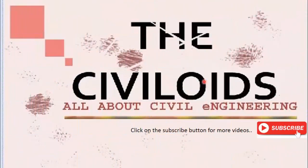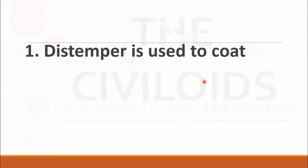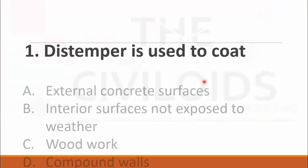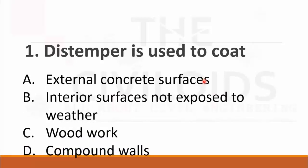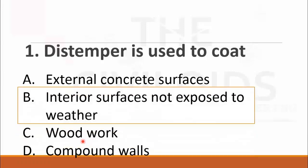Let's start today's topic. The first question is: Jumper is used to coat. The choices are: A. external concrete surfaces, B. interior surfaces not exposed to weather, C. woodwork, and D. compound walls. The right choice is B. interior surfaces not exposed to weather.